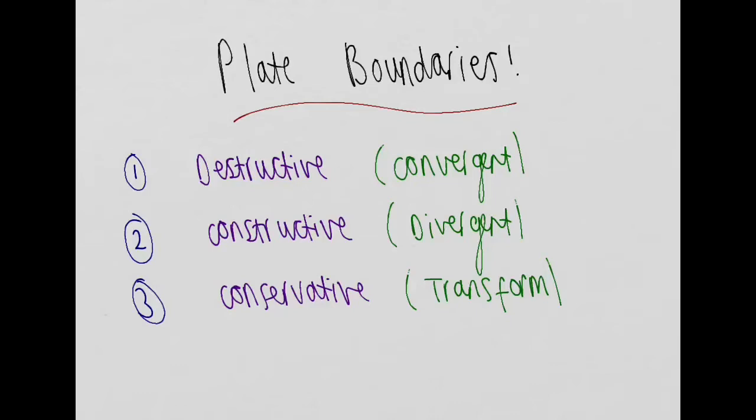There are three types of plate boundaries that you must know. The first is destructive, also known as a convergent plate boundary. The second is constructive, also known as a divergent plate boundary. And the third is conservative, also known as a transform plate boundary.